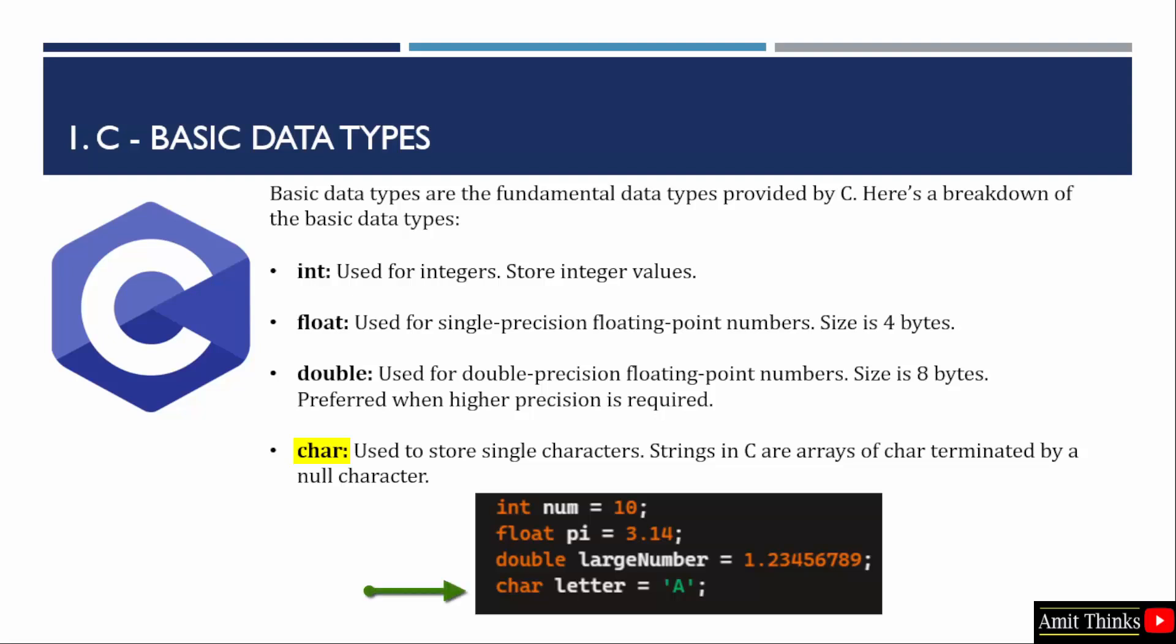Here is an example in the end. Char is our variable here. And using this, we have stored a single character A. So these were the basic data types in C language.